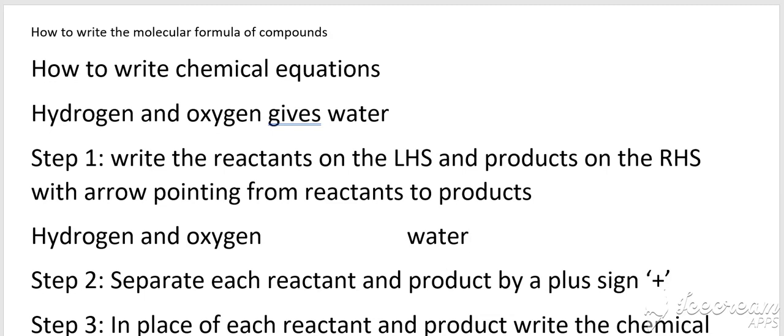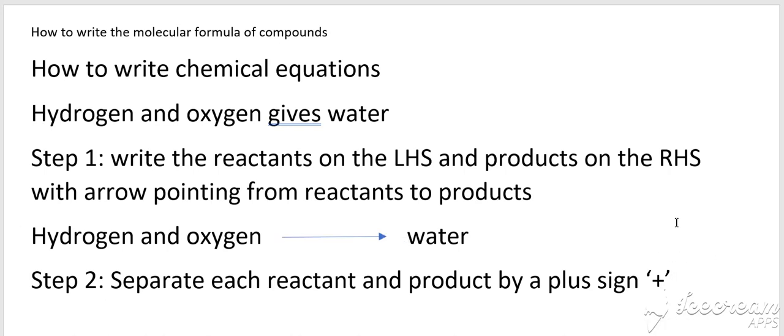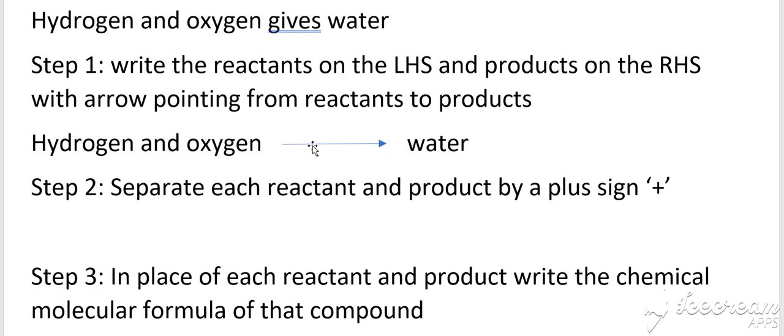So this has to be separated by an arrow that is pointing from the reactants towards the products. Then what we are going to do is separate the reactants and products with plus sign. So hydrogen plus oxygen, this gives water, and this arrow will be there in between.